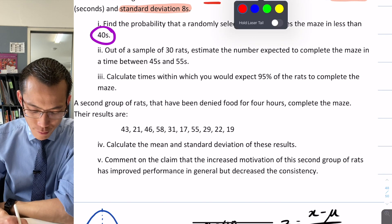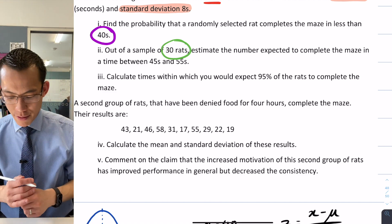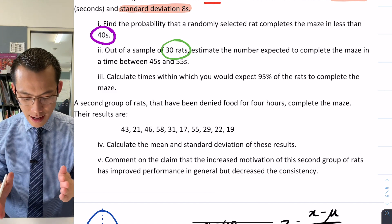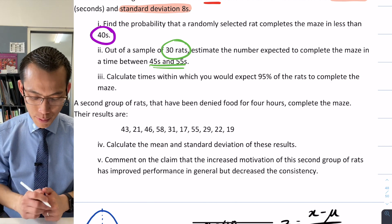Out of a sample of 30 rats, estimate the number expected to complete the maze in a time between 45 and 55 seconds. So those are the other important numbers.